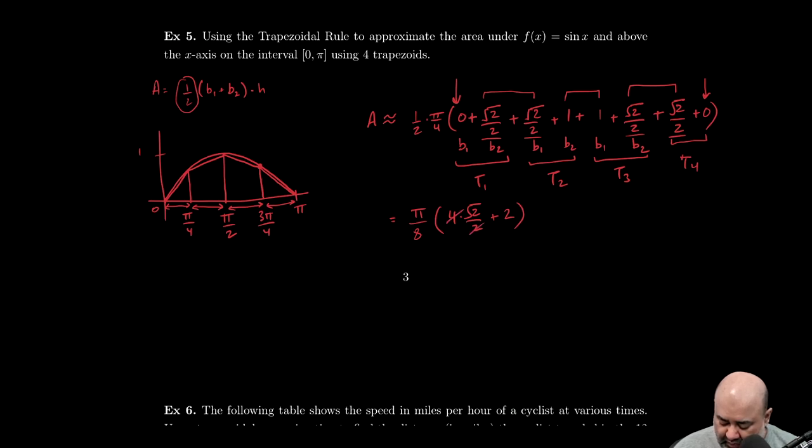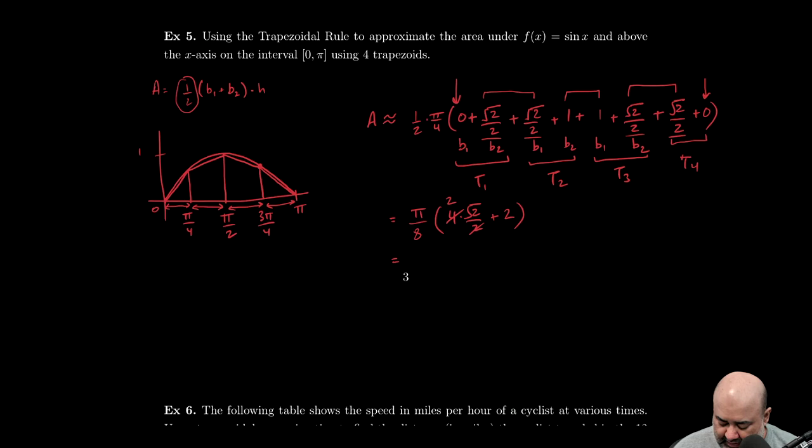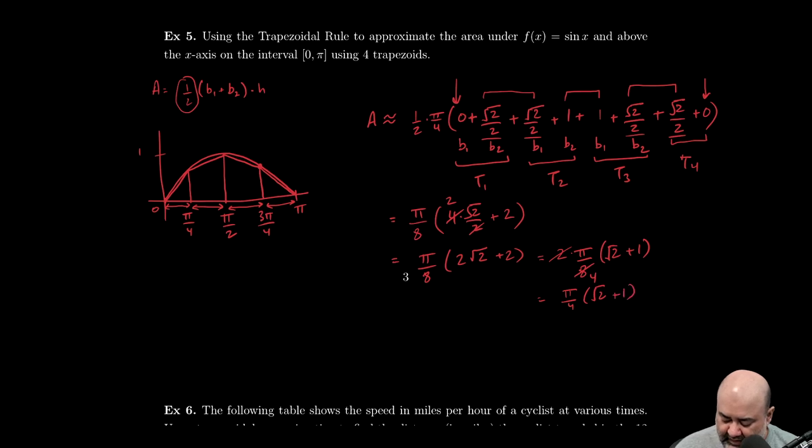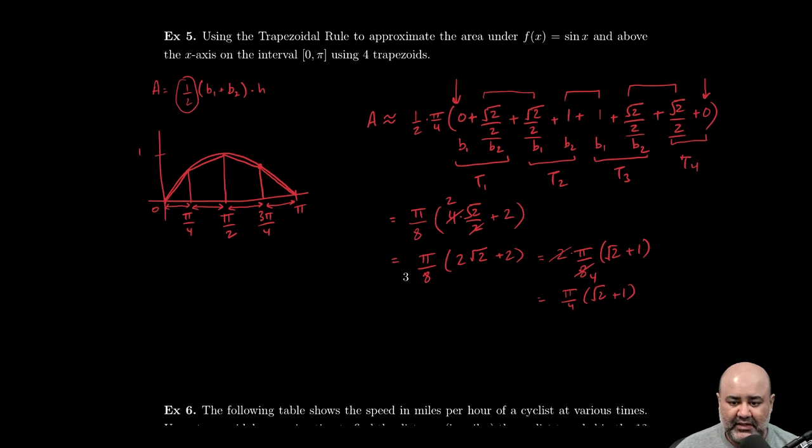Two goes into four twice, so this is really π/8 times 2√2 plus 2. And at this stage, if you really wanted to, you could factor out a two, which would be 2 times π/8 (√2 + 1). Two goes into eight four times, which should be π/4 times (√2 + 1). Do not do any of these computations on the AP exam.